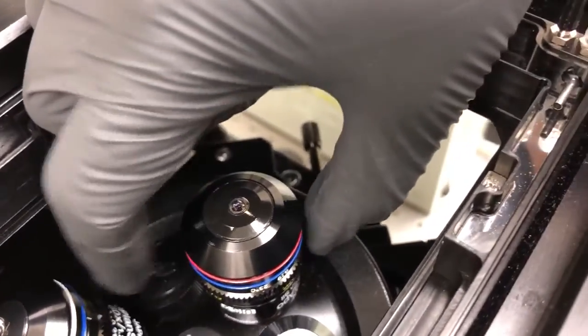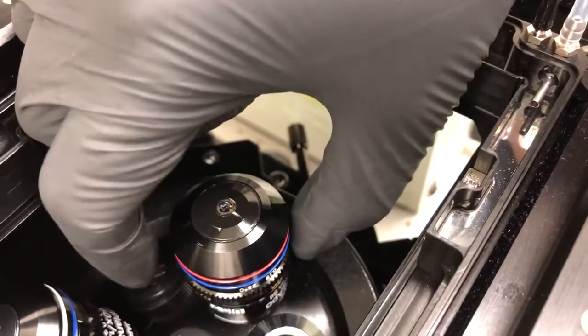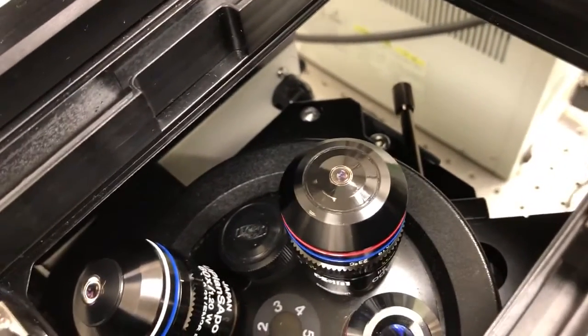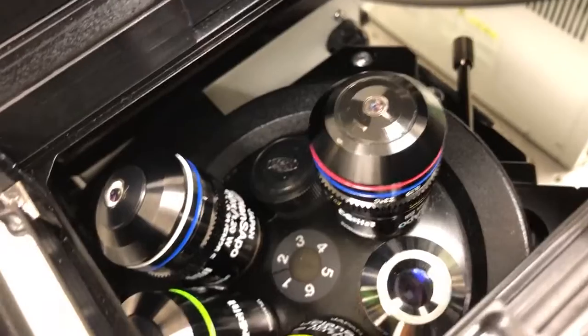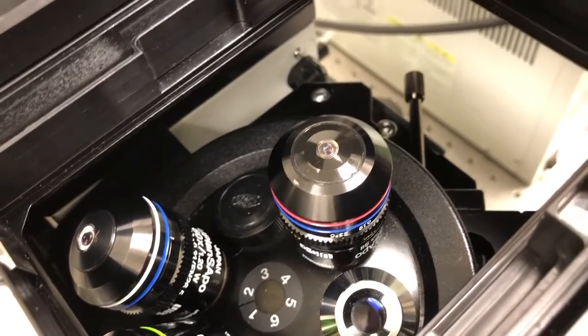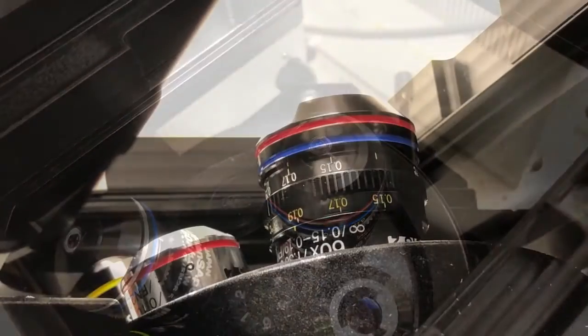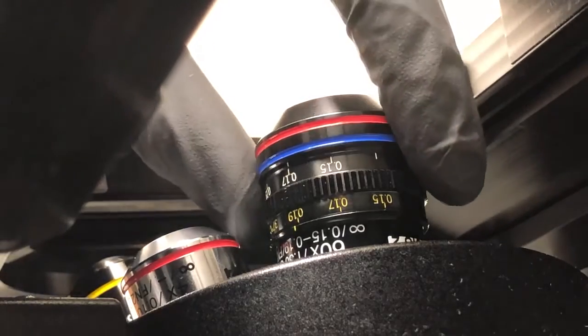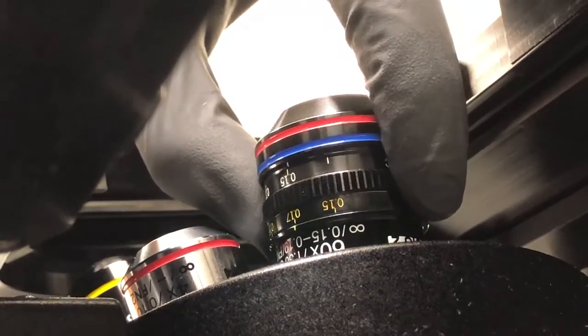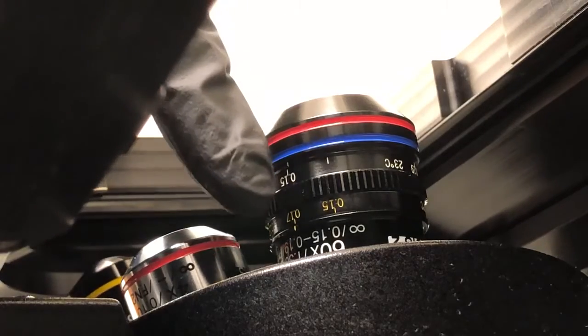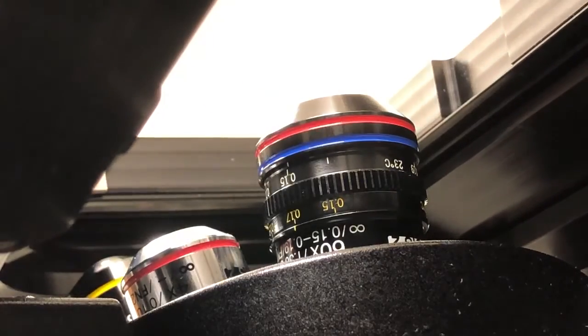And now we need to reach in and twist, turn this correction collar until the setting that we want is in place. And so the setting that we want is 0.17 at the 37 degrees, which are the yellow markings. I've placed the camera at an angle that you can see a little bit better what I'm doing. I'm going to put my fingers in here and turn that correction collar until the 0.17 is aligned in the orange side, so for 37 degrees.